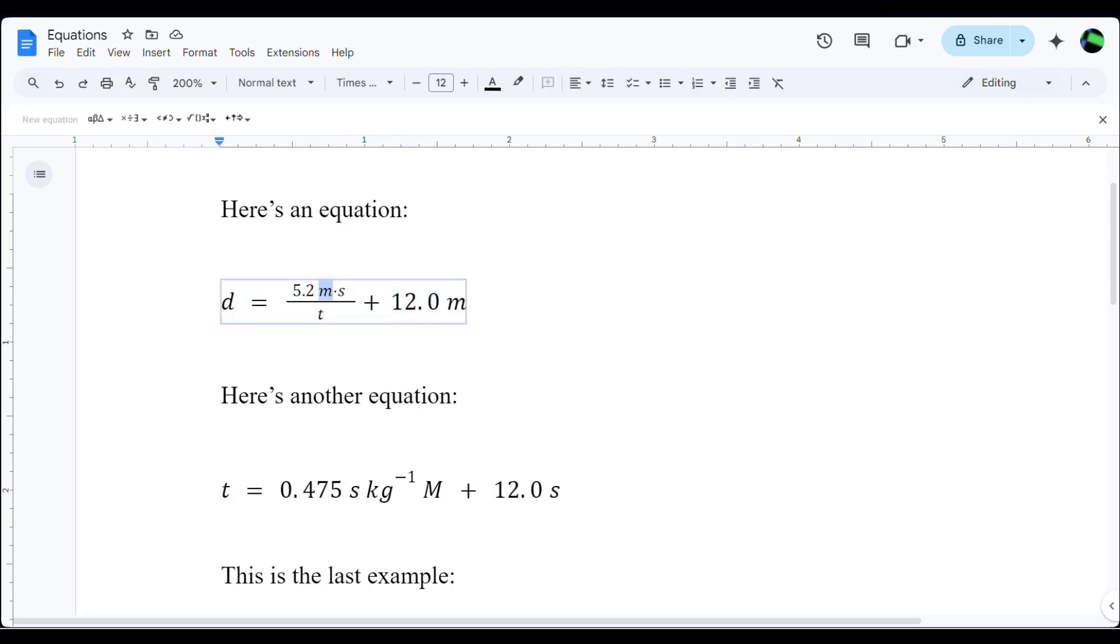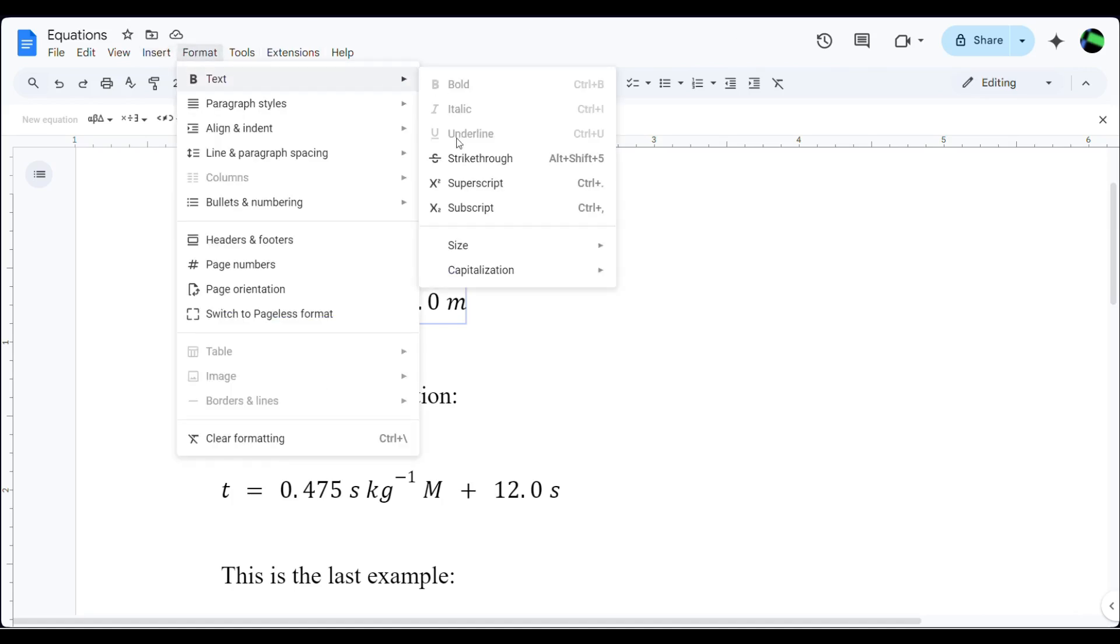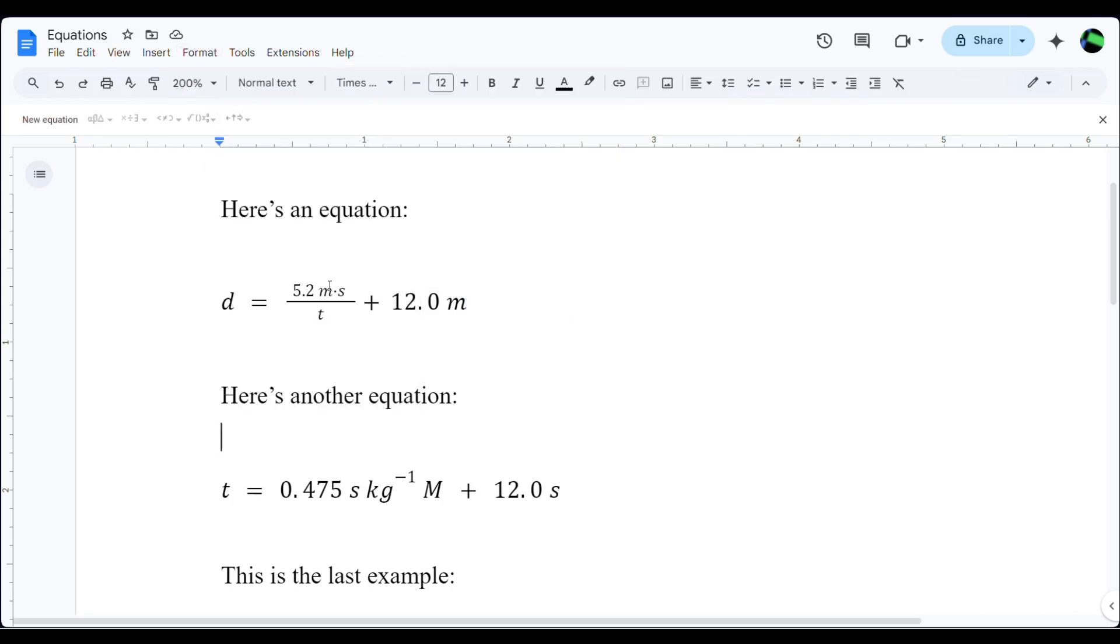So if I try to undo it, I highlight the M and go to Format, Text, and try to unitalicize it, it won't let me. And if I use the keyboard shortcut Ctrl-I, nothing happens. It doesn't let me do it.